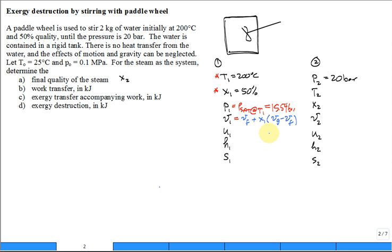Would I use the equation that it's V sub F plus the quality at 1 times V sub G minus V sub F? Yeah, that's right. How about if I wanted internal energy at 1? Is it U sub F plus the quality at 1, U sub G minus U sub F? And the same with H and the same with S. So let's put S of F plus quality at 1, S of G minus S of F.